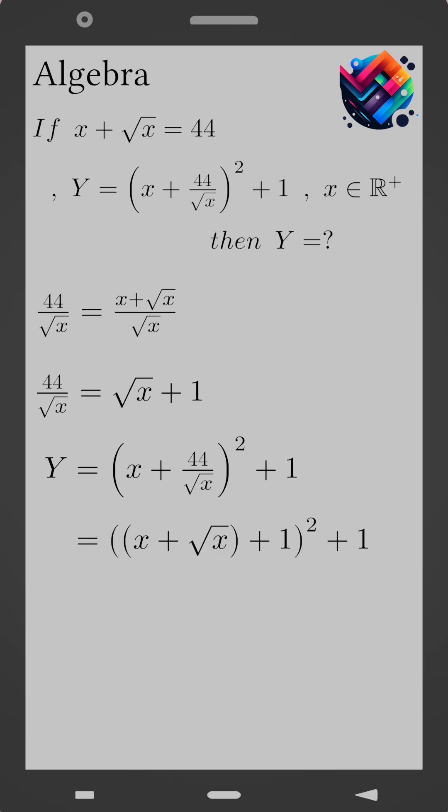But x plus square root of x is 44. Therefore, Y equals (44 plus 1) all squared plus 1. That is, Y equals 45 squared plus 1, which gives Y equals 2026. That's the final answer.